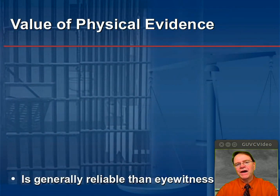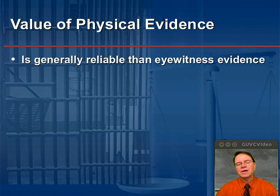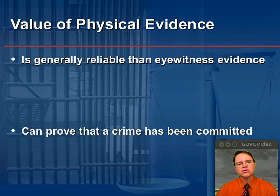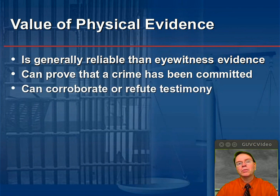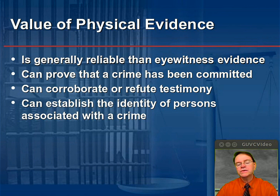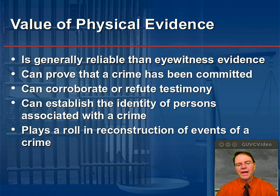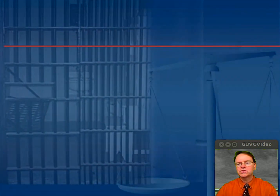First, the value of physical evidence. Generally, physical evidence is considered more reliable than testimonial evidence. It's consistently measured. It can prove that a crime has been committed. It can corroborate or refute the testimony that someone gives in court. It can also establish the identity of persons associated with the crime, and plays a role in reconstructing the events of a crime as well.